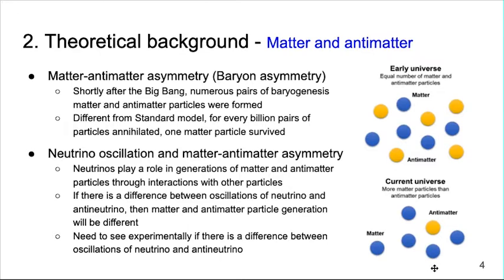To explain this, it was proposed that the difference between oscillations of neutrino and antineutrino could make a difference in the creation rate of matter and antimatter particles, and the accelerator experiments were planned to explain this.